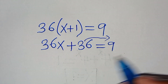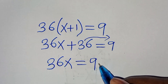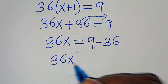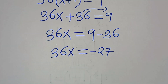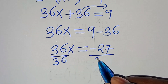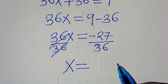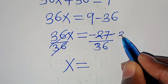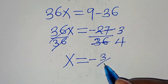Let's move 36 to the right hand side, so that we have 36x equal to 9 minus 36, which is equal to minus 27. To solve for x, we divide both sides by 36. Simplifying, 27 divided by 9 is 3, and 36 divided by 9 is 4, so x is equal to minus 3 over 4.